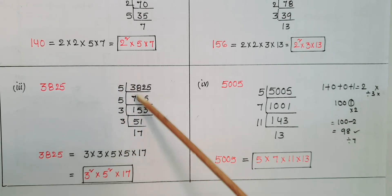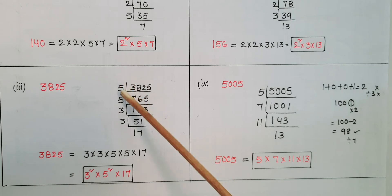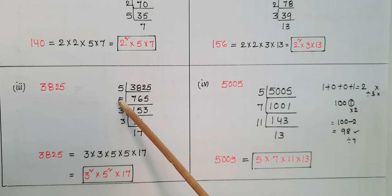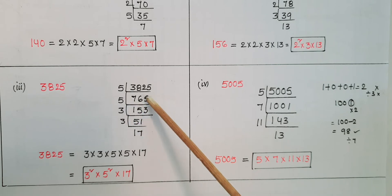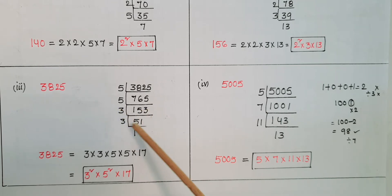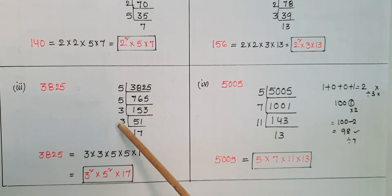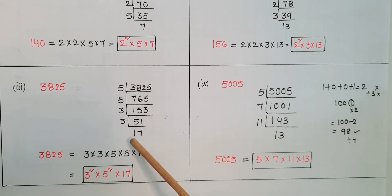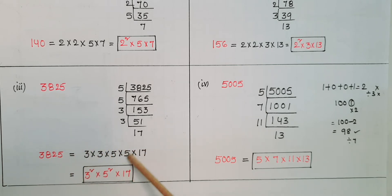The next number is 3825. The last digit is 5, so we try dividing by 5: 3825 ÷ 5 = 765, then 765 ÷ 5 = 153. Now 153 — try dividing by 3: 153 ÷ 3 = 51, then 51 ÷ 3 = 17. Since 17 is a prime number, we stop here. So 3825 equals 3 squared into 5 squared into 17.